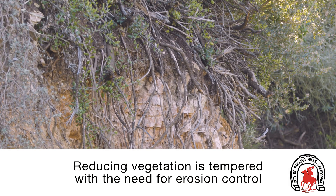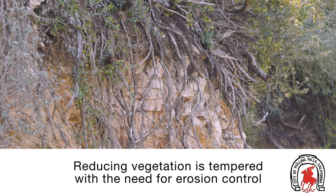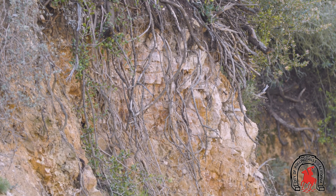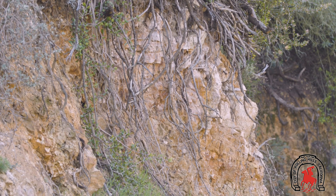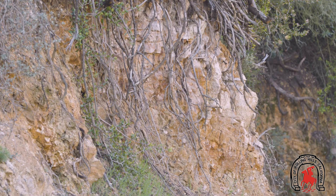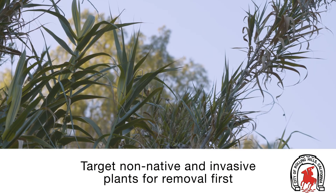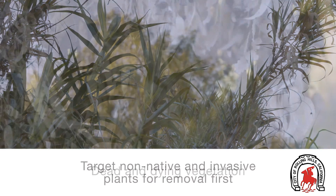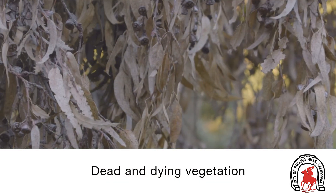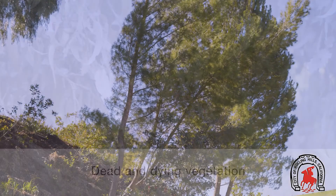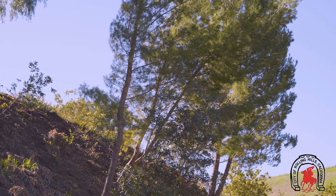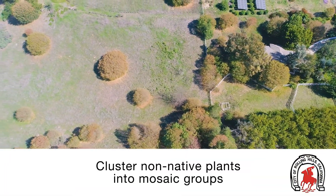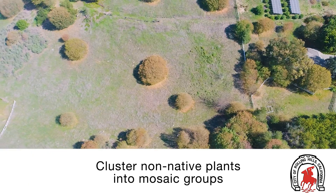Reducing vegetation in the steep zones has to be tempered with the need for erosion control — we discuss erosion in more depth in video five. You should target non-native and invasive plants for removal first, as well as dead and dying vegetation. You don't need to remove all the non-native plants; cluster them into mosaic groupings like we discussed in the previous video.